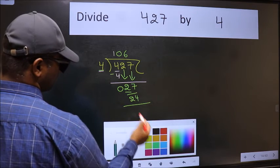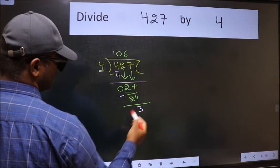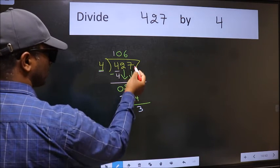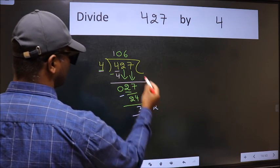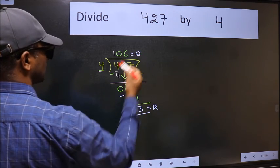Now we should subtract, we get 3. No more numbers to bring it down, so we stop here. This is our remainder and this is our quotient.